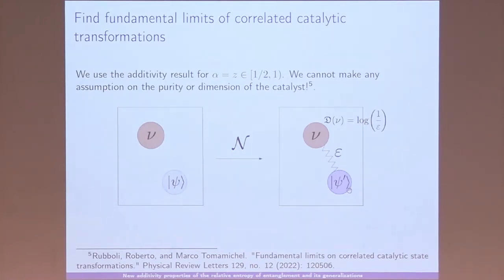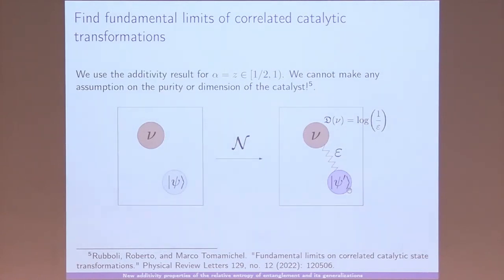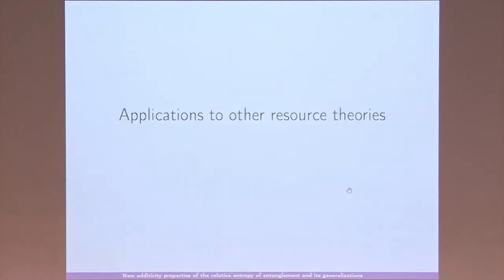In a similar spirit, we looked at correlated catalysis. The idea also comes from the previous slides: we can obtain necessary conditions and rely on a continuity bound. Correlated catalysis means that at the end of the transformation ψ' and ν are ε-correlated. Using these additivity properties we show a divergence of the catalyst's resource as log(1/ε), where ε is the amount of correlations. So small correlation implies a highly resourceful catalyst. The additivity result is crucial here because we impose no assumption on the catalyst.